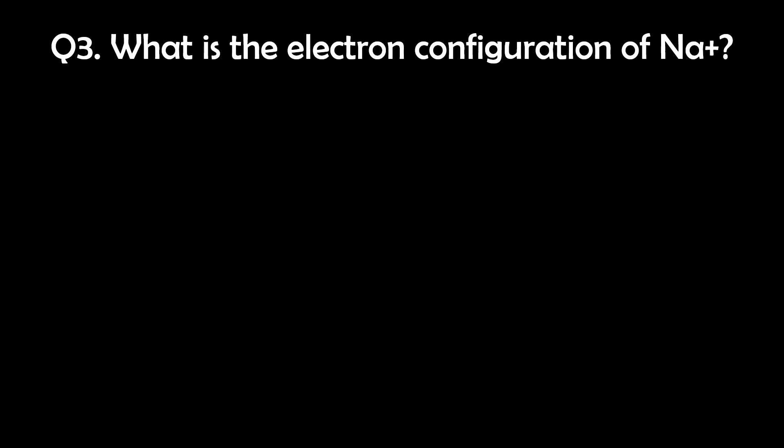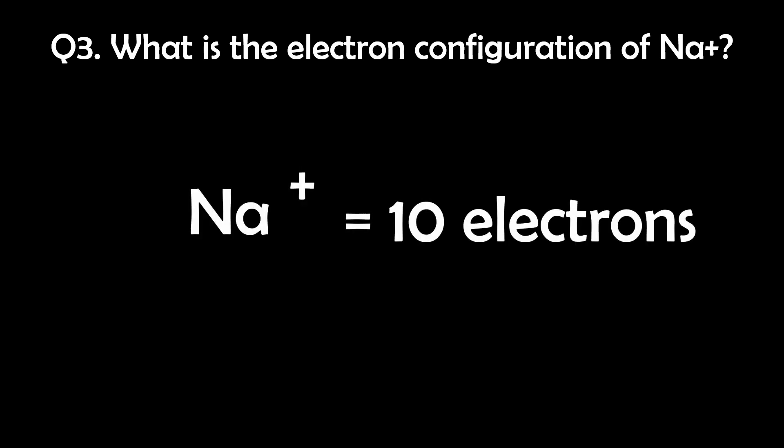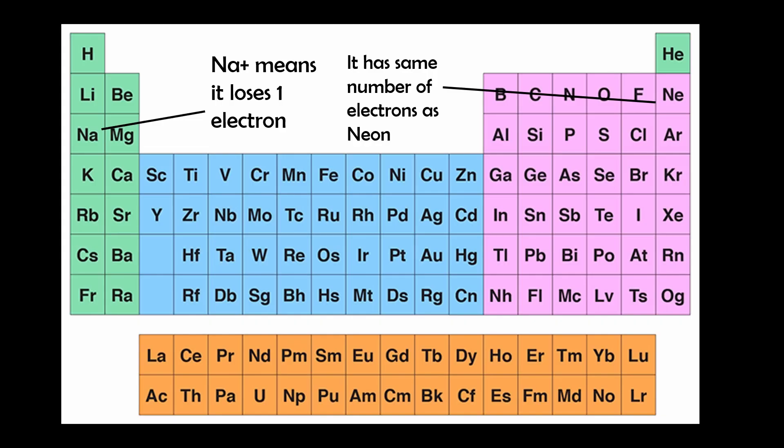Question 3. What is the electron configuration of sodium plus? Sodium in its ionized state contains 10 electrons. This ion has a plus 1 charge, indicating the loss of 1 electron from the neutral sodium atom.